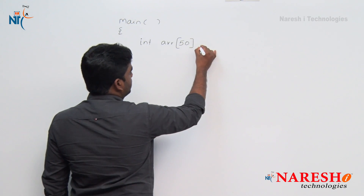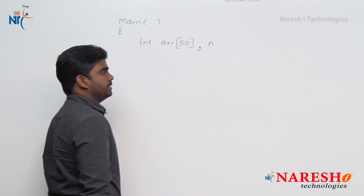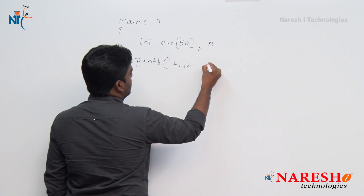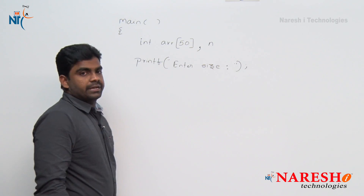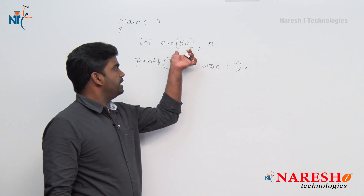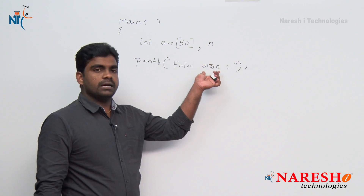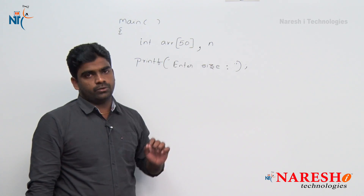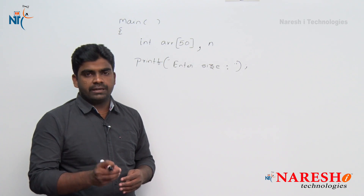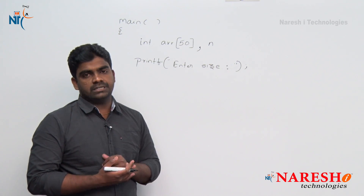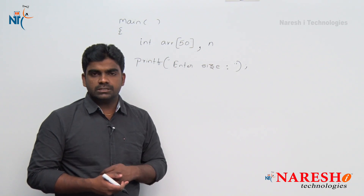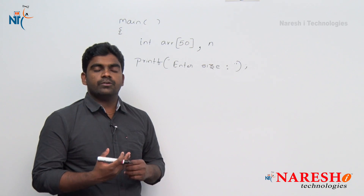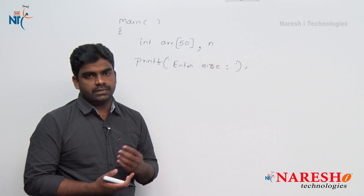To read the size, I am declaring one more variable n. We are asking: printf enter size of array — but remember the maximum number of elements, that is the maximum size we can mention, is 50 because the reserved space is 50 only. Suppose the end user input is 5, so we are working with only 5 elements. Remaining 45 memory locations we cannot use — waste of memory as of now. This problem we can resolve with a dynamic memory allocation concept later.